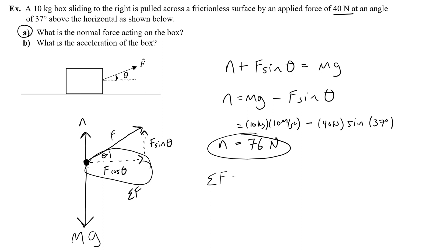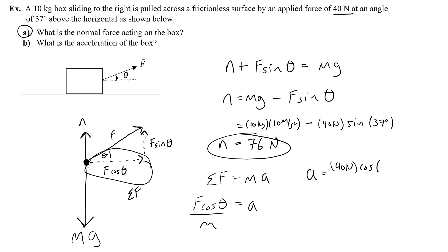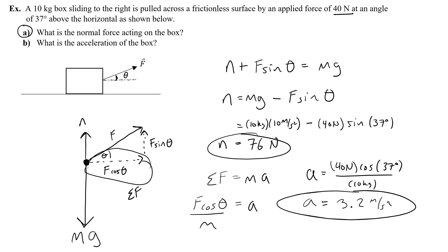Net force is always equal to mass times acceleration. The net force here is F cosine theta. To find the acceleration, we divide both sides by the mass. So: a = 40 N × cosine(37°) ÷ 10 kg. That gives 3.19, which we round to 3.2 meters per second squared. That is the answer to part B.